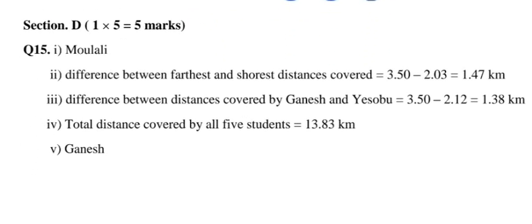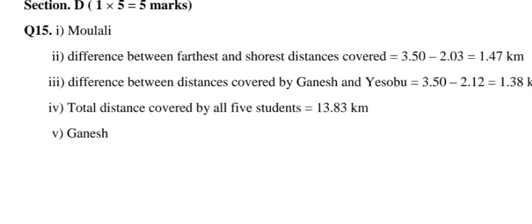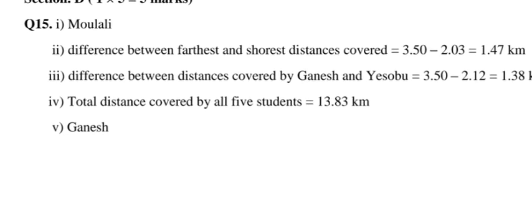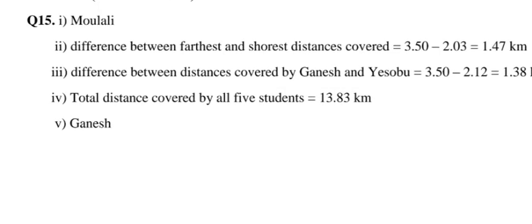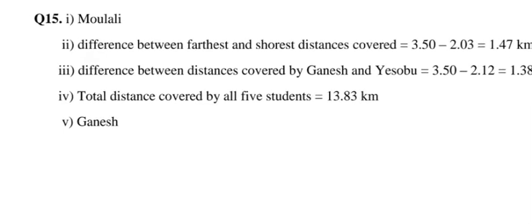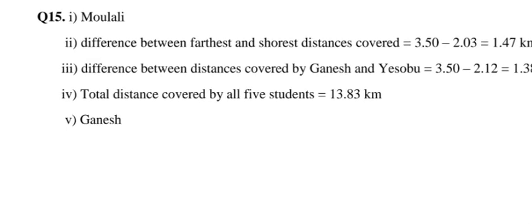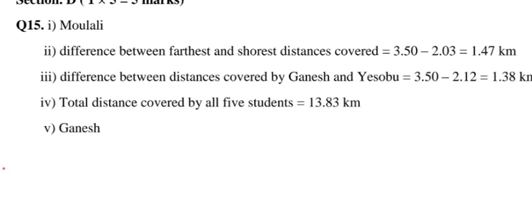Section D answers: (i) Maulali covered the shortest distance. (ii) The difference between the farthest and shortest distance covered is 1.47 kilometers. (iii) The difference between distances covered by Ganesh and Yasubu is 1.38 kilometers. (iv) Total distance covered by all five students is 13.83 kilometers. (v) Ganesh is the correct answer for the student closest to running four kilometers.